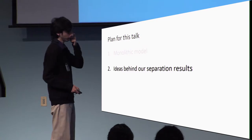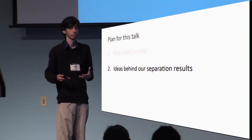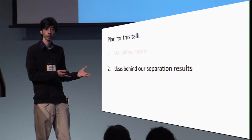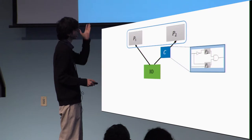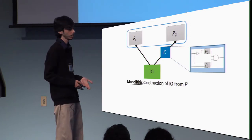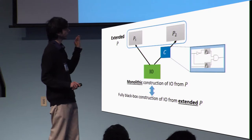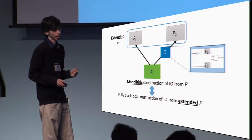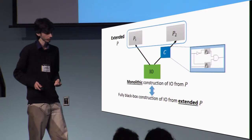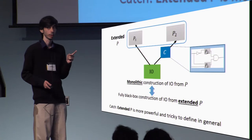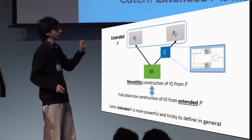Now let's go over the high-level ideas behind the separation results. All of our results are based on proving an impossibility of I.O. from some form of witness encryption, so I'll focus on witness encryption for the rest of the talk. To prove that a monolithic construction of I.O. from P is impossible, there is an equivalent way of looking at it: you can view it as a fully blackbox construction of I.O. from what we call an extended P, where extended P is simply the primitive P allowed to accept circuits with any types of gates inside it.